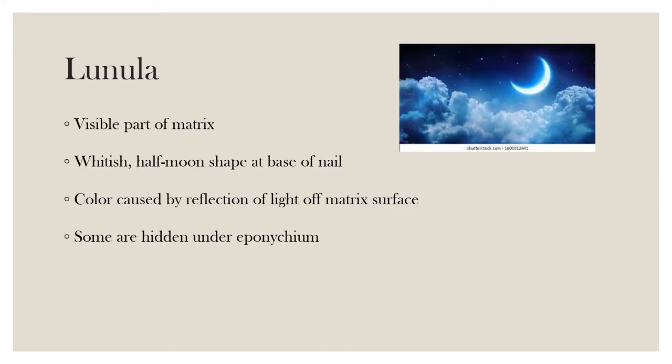The lunula is the visible part of the matrix that extends from underneath the living skin. It is the whitish half-moon shape at the base of the nail. The whitish color is caused by the reflection of light off the surface of the visible part of the underlying matrix. Every nail has a lunula, but some lunulas are short and remain hidden under the eponychium.